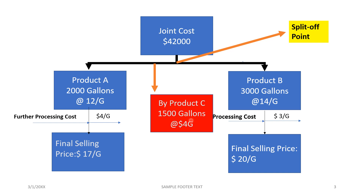If the byproduct's value is immaterial, it is treated as scrap. However, if the total value of the byproduct produced in the common process is material and inventoriable — that is, considered as part of inventory — it is capitalized as inventory and its value is deducted from the joint cost. Only the remaining value is then divided among the main products.